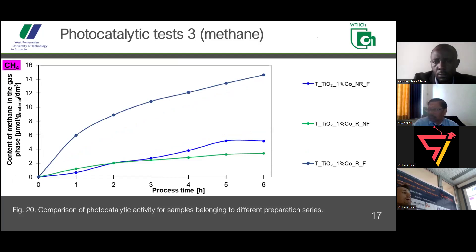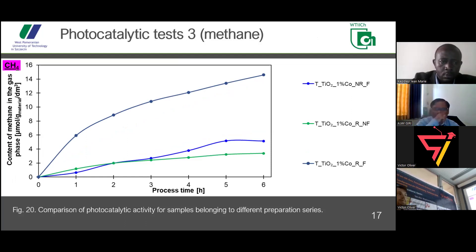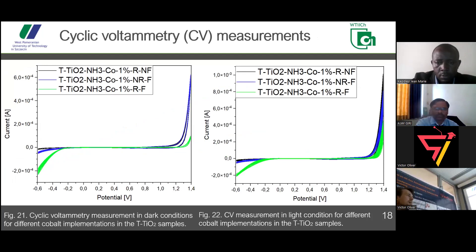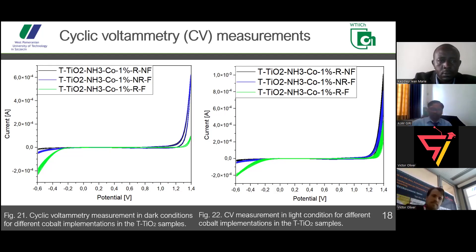In our research, we also found that adding ammonia water actually decreases the photocatalytic activity — it decreases how much product is obtained. All three of those samples were obtained using ammonia water. So we prepared another batch of samples. Before that, I will also speak about cyclic voltammetry measurements, because these photocatalysts should also be suitable for photo-electrocatalysis.